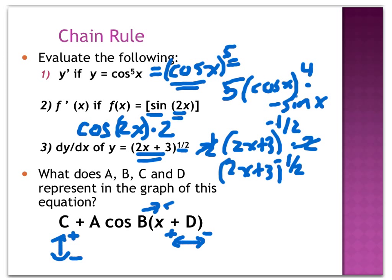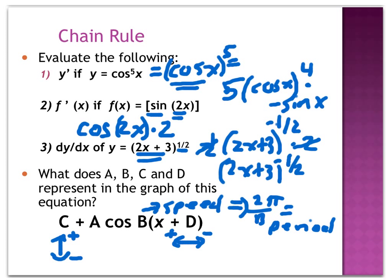b gives the period through 2π over b — so b does not directly give the period, it's an indirect relationship. a is the amplitude, and at least alphabet-wise it actually matches up. The amplitude is how tall the mountains are and how deep the valleys are. So a is the amplitude.